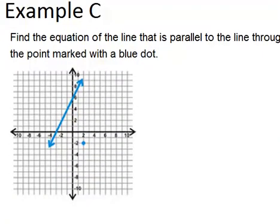Finally, let's look at example C. Find the equation of the line that is parallel to the line through the point marked with a blue dot. Okay, so we're trying to find the line that will go through this blue dot, approximately like this, that will be parallel to the original line.